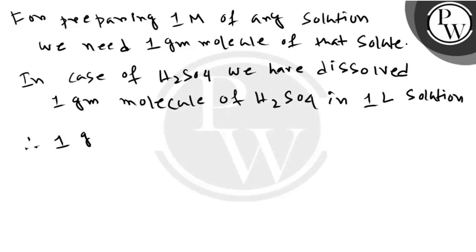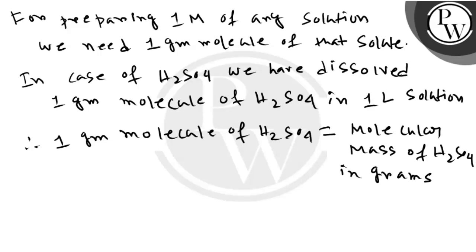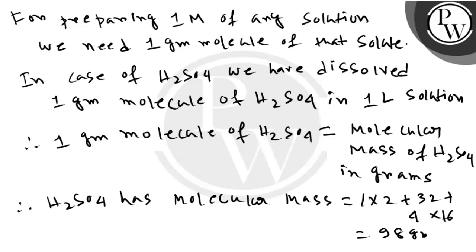Therefore, 1 gram molecule of H2SO4 is equal to the molecular mass of H2SO4, which equals 1 times 2 plus 32 plus 4 times 16, equal to 98 grams per mole.